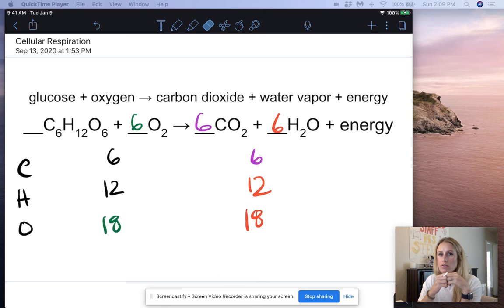So because of that, when those bonds break and then reform, that energy has to be released because they had higher energy in their bonds. And now the reactant, sorry, the product bonds are lower. So that energy has to be released as well.